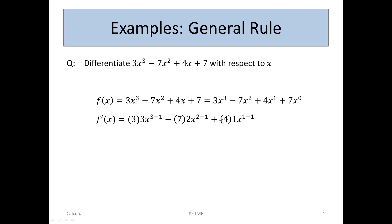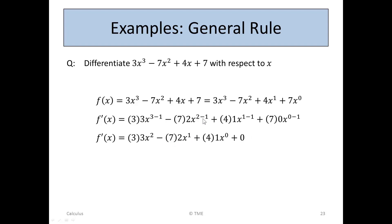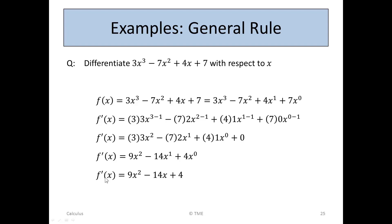For the 4x term, the 1 comes down: 4 times 1x to the 1 minus 1. For the 7, or 7x to the 0, we get 7 times 0 times x to the 0 minus 1. Working that out: 3 times 3 gives 9x squared, minus 7 times 2 gives minus 14x to the 1, plus 4 times 1 gives 4x to the 0, and 0 times anything is 0. Since x to the 1 is x and x to the 0 is 1, f'(x) is 9x squared minus 14x plus 4.